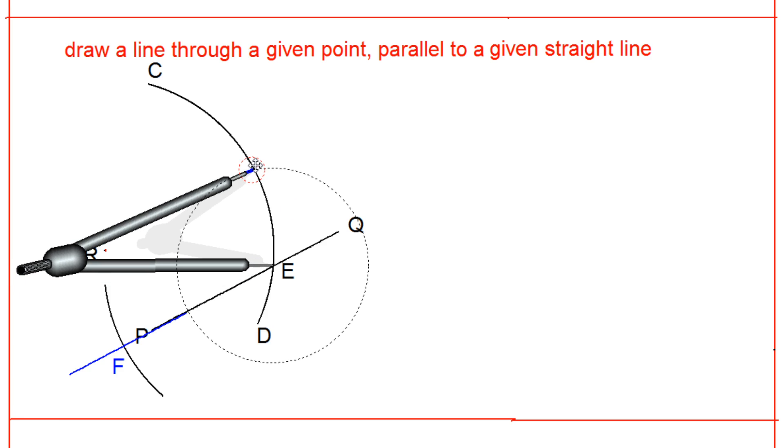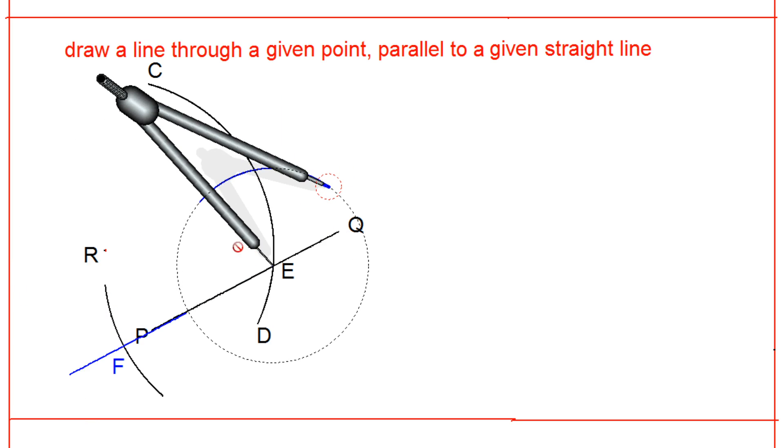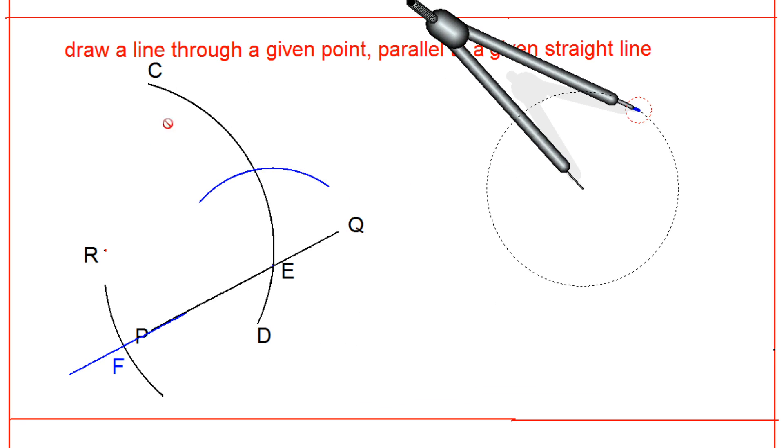And draw an arc. Again I am drawing with a different color. Now you see this arc has cut the original arc CD at any point S. I will give this point name as S.